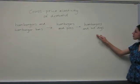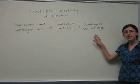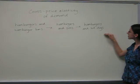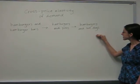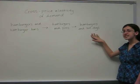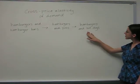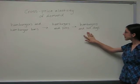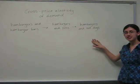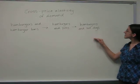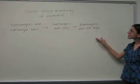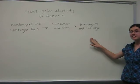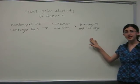Increasing the price of hamburgers will likely increase the quantity demanded of hot dogs because consumers will buy hot dogs in replacement of hamburgers. These goods are substitutes, and the cross-price elasticity of demand is positive.